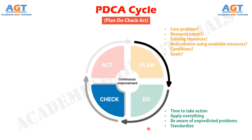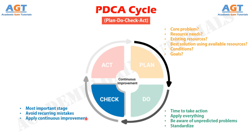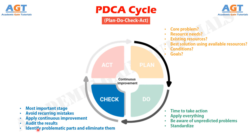Step number three: Check. This is probably the most important stage of the PDCA cycle. If you want to clarify your plan, avoid recurring mistakes, and apply continuous improvement successfully, you need to pay enough attention to the check phase. Here, you need to audit your plan's execution and see if your initial plan actually worked. Moreover, your team will be able to identify problematic parts of the current process and eliminate them in the future. If something went wrong during the process, you need to analyze it and find the root cause of the problems.